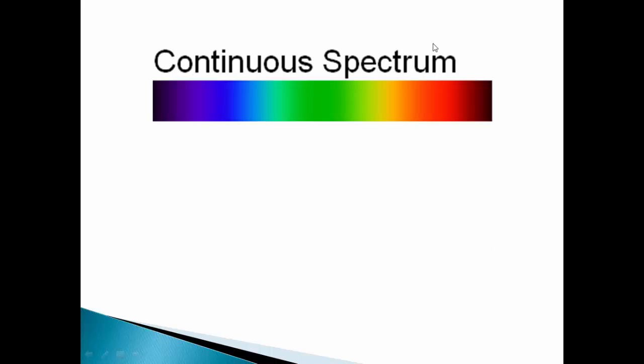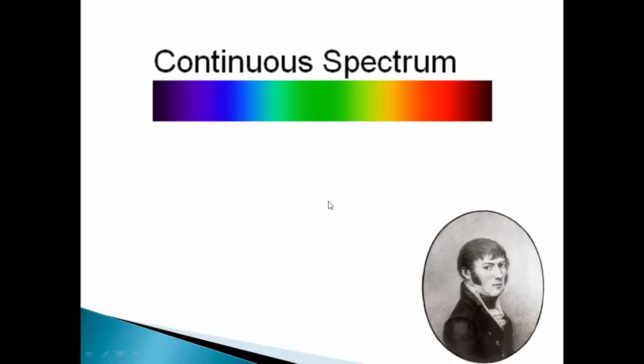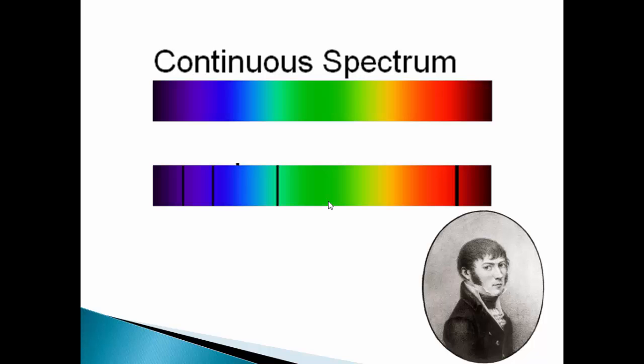This is what a normal continuous spectrum is supposed to look like. Fraunhofer, while he was studying the spectrum using the Sun as the source of light, he found the spectrum to be missing few colors. These lines were later known as Fraunhofer lines. If you want to know detail of his experiment I'll drop a link here at the top.